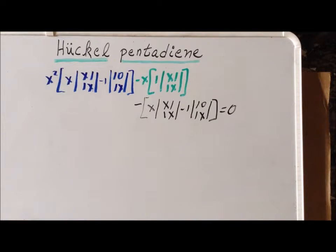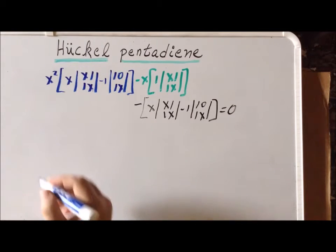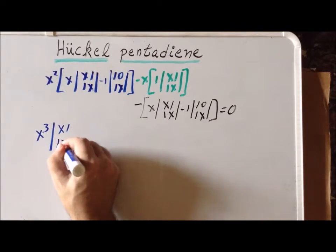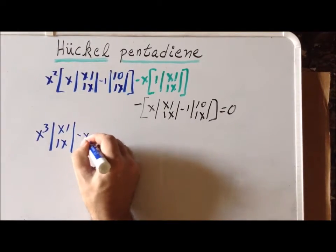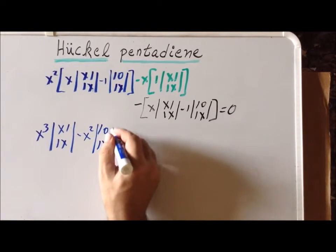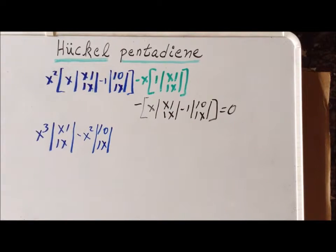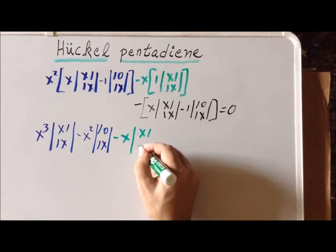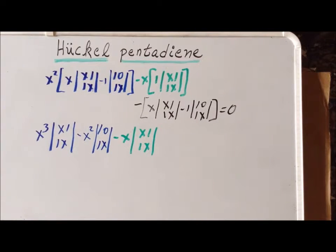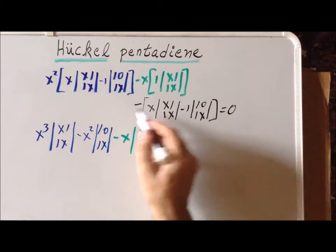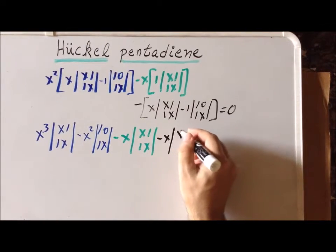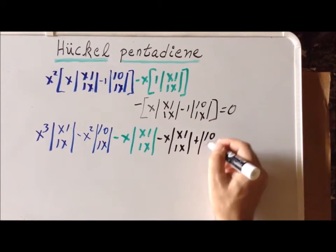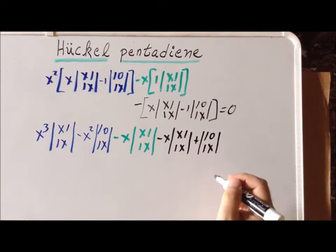We use the distributive law to simplify further. That gives x cubed times the two-by-two determinant (x, 1, 1, x) minus x squared times (1, 0, 1, x) for the blue terms. For green, minus x times minus 1 gives plus x times (x, 1, 1, x). For the black terms, minus x times (x, 1, 1, x), and minus times minus 1 gives plus (1, 0, 1, x). This is all equal to zero.